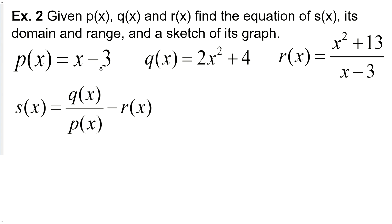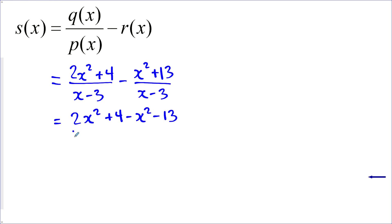Example two, we're given p(x) and q(x) and r(x). And we're trying to make the equation of s(x). Let's put those together and see what it looks like. We've got q(x) first, p(x) minus r(x). And lucky us, we've got a common denominator. So we can actually put these together. 2x squared plus 4x minus x squared. Remember the minus applies to both terms here. Let's collect up like terms for the numerator here. 2x squared minus x squared is just x squared. Plus 4 minus 13 minus 9.